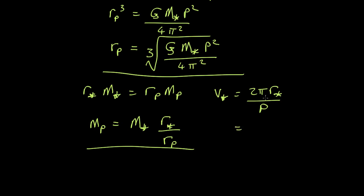v star equals, we've got the r of the star, it's going to be equal to 2 pi over the period times r star, which is r planet m p over m star, so it's m planet over m star times the r.